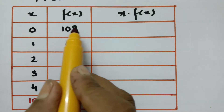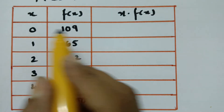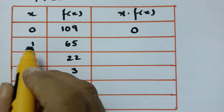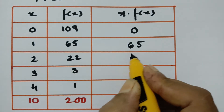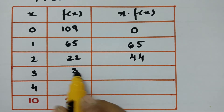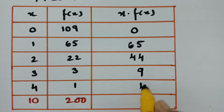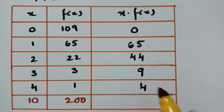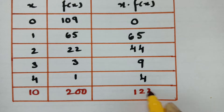Now for x times f(x): 0 × 109 = 0, 1 × 65 = 65, 2 × 22 = 44, 3 × 3 = 9, and 4 × 1 = 4. Adding all these values gives a total of 122.